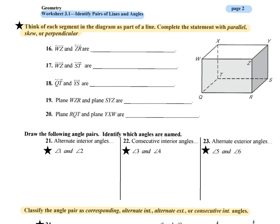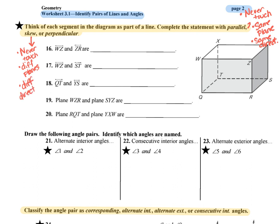Let's first quickly give a rundown of these definitions. Parallel lines are two lines that never touch — they have to be in the same plane and go the same direction. Skew lines are two lines that also never touch, but they are in different planes and go different directions. Perpendicular lines are lines that make a 90-degree angle when they intersect.